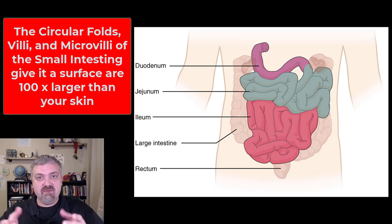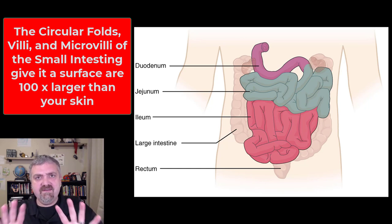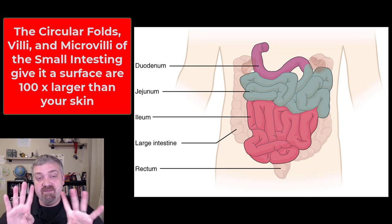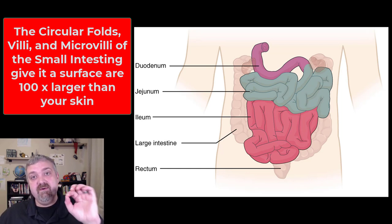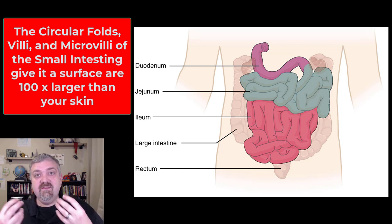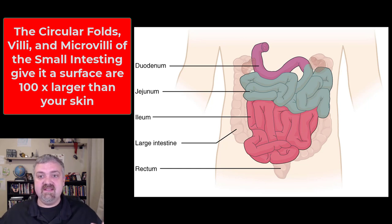The small intestine has what are called circular folds, so it has folds inside of it. And then these folds are covered in fingers called villi, and then the cells of these fingers are covered with microvilli. So you have folds with fingers on them, and that's how you get this massive surface area.